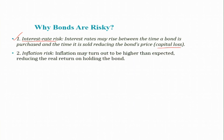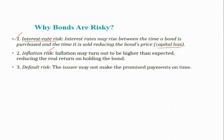The second risk is called inflation risk — inflation may turn out to be higher than expected, reducing the real return on holding the bond. The third and most important risk is default risk. Default risk means the issuer may not make the promised payment on time — perhaps the borrower became bankrupt, or deliberately doesn't want to pay back, or is attempting fraud. Default risk is a key factor that makes bonds more risky.